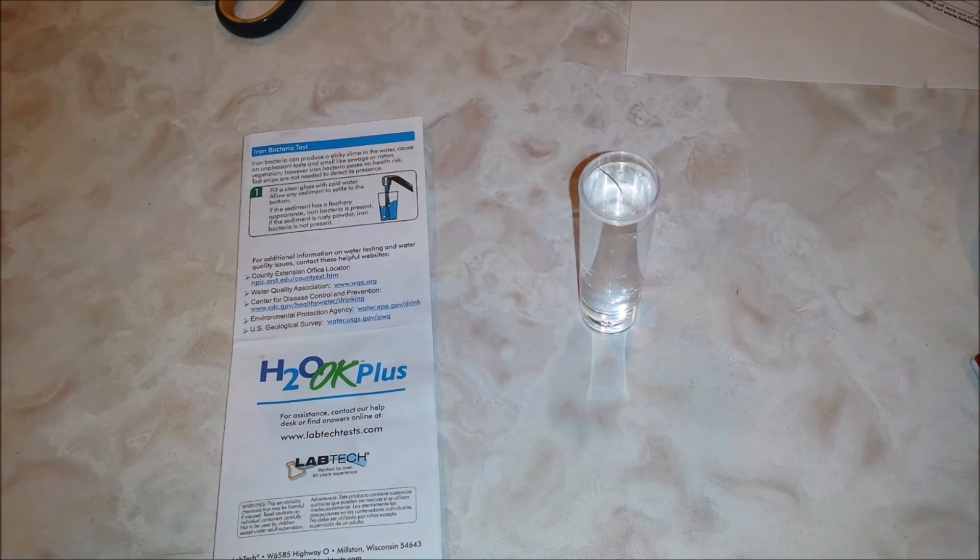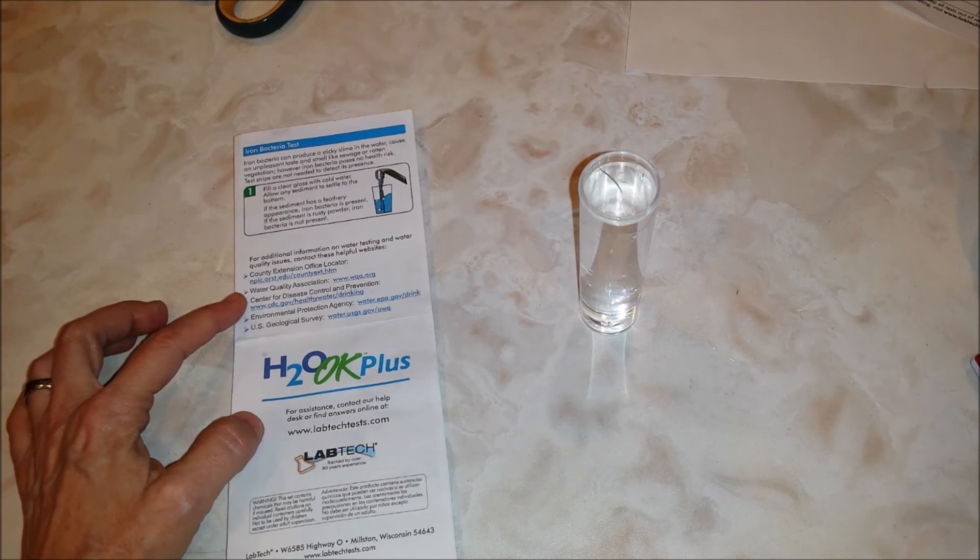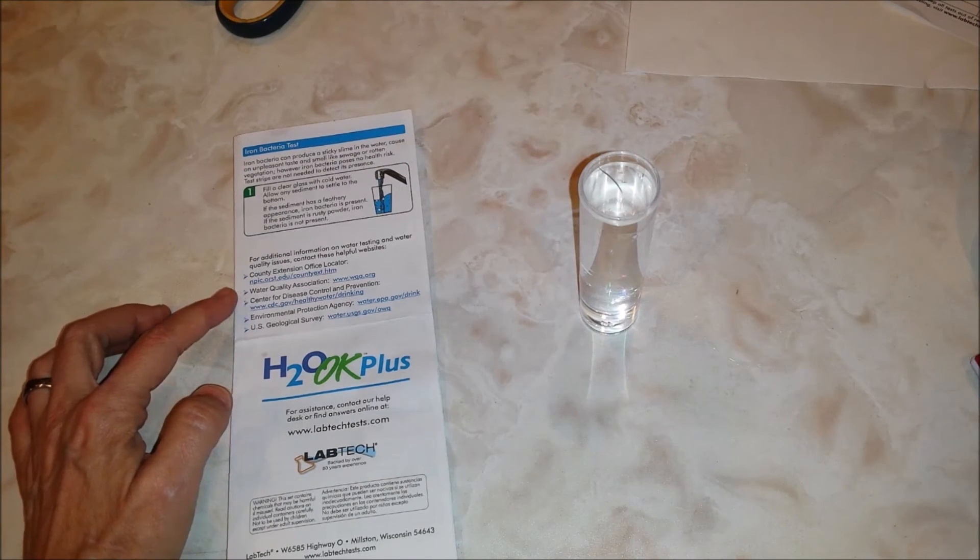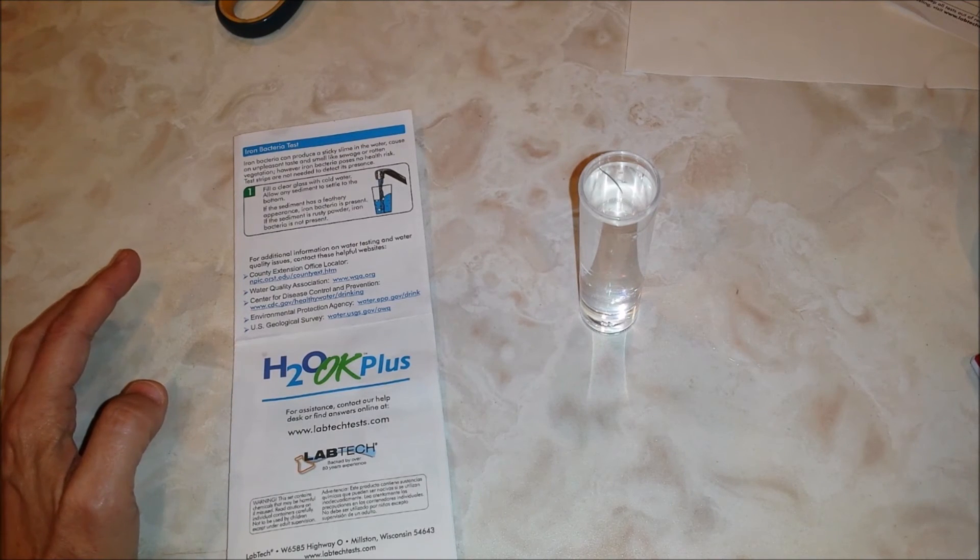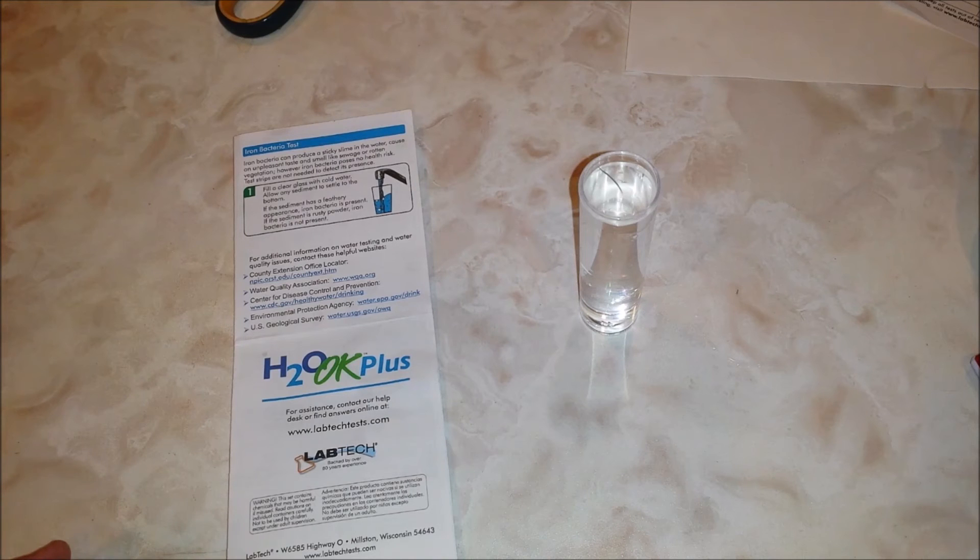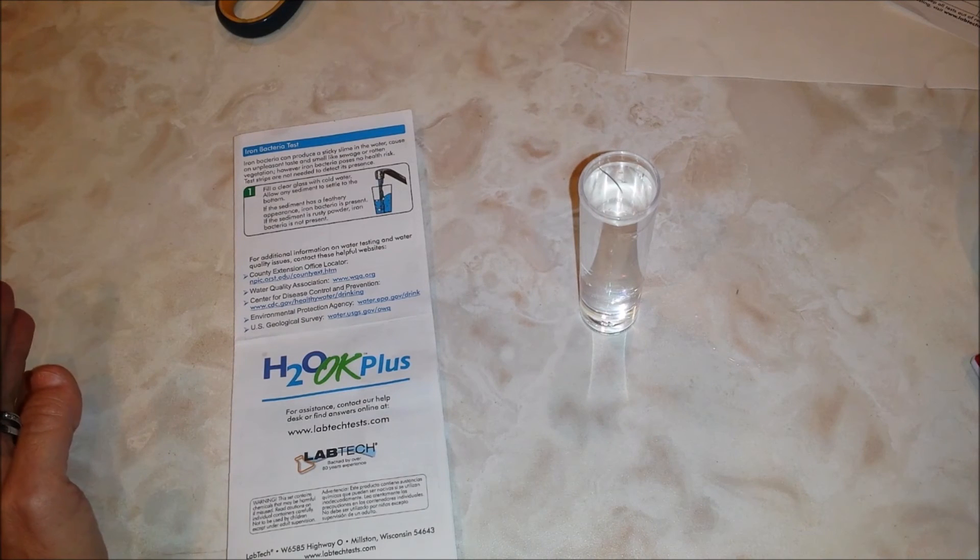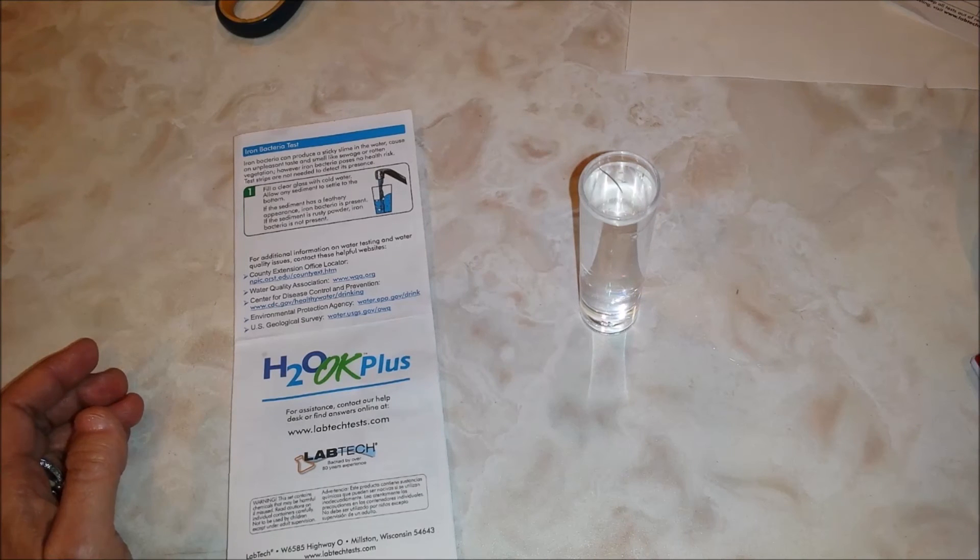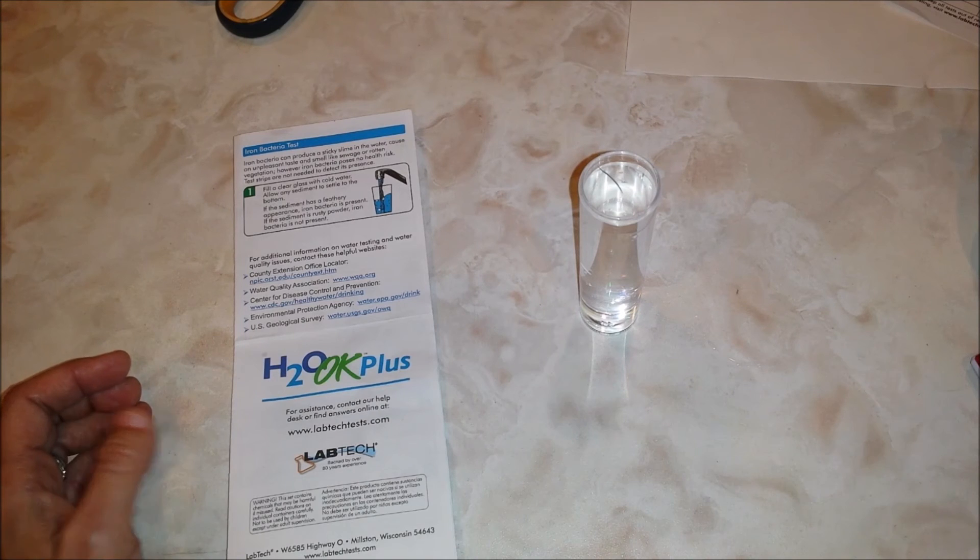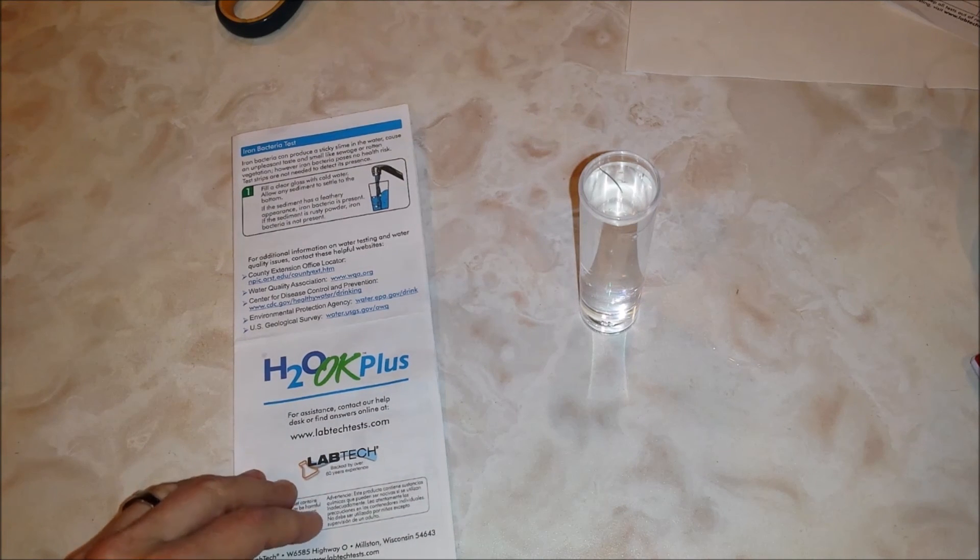Our last test is to test for iron bacteria. We're not testing for iron, we're testing for a microorganism called iron bacteria. You fill a clear glass with cold water and allow any sediment to settle to the bottom. You want to allow it to sit for four to five minutes, not just until you can't see it moving anymore. Then look for any sediment at the bottom. If your sediment has a feathery appearance, that means the iron bacteria is present. If you don't see anything or you see a rusty powder, that means iron bacteria is not present. I don't have a totally clear glass because all mine are colored. But my clear vial of water has been sitting for a few minutes, and I really don't detect any noticeable sediment. So I believe I'm negative for iron bacteria.